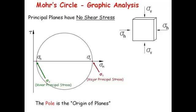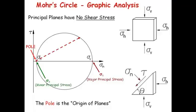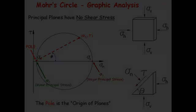Now, if you go by the definition of the origin of plane, any line that you draw from the pole will intersect the circle at a point that represents the stresses, the y-axis, the y and x values for the normal and shear stresses. So that's the beauty of the Mohr circle. Once you have it built, once you have the pole, you can define stresses in any angle.